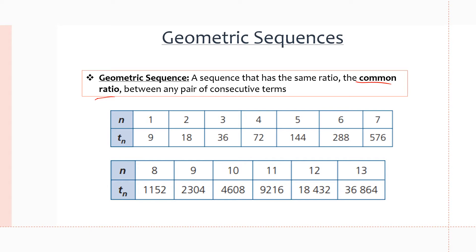For arithmetic sequences we used addition to get the next term, but for geometric sequences we multiply. So we're multiplying 9 times 2 to get 18, then 18 times 2 to get 36, then 36 times 2 to get 72, and so on. The common ratio is 2 because 18 divided by 9 equals 2, and 36 divided by 18 equals 2, and so on. In the second example, for terms 8 through 13, we are just multiplying by 2 to get the next term.